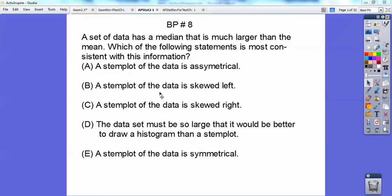It's this guy right here, because if the mean is to the left, because it's less than, then it's going to be skewed to the left right there. So it's choice B. So the one that's most consistent, choice B.